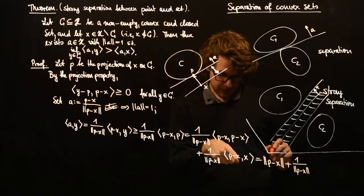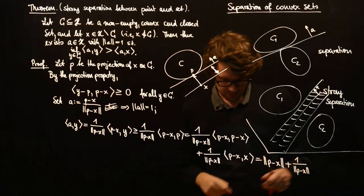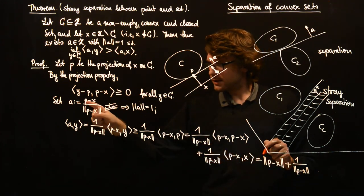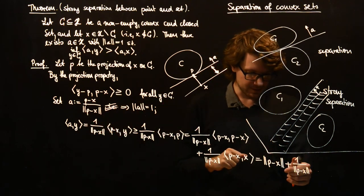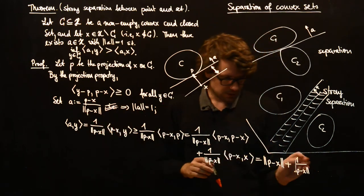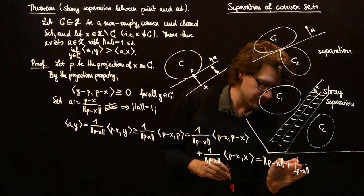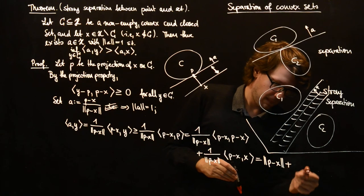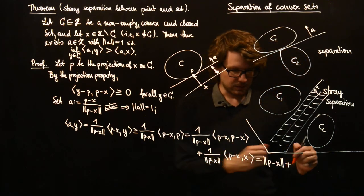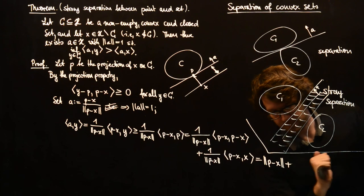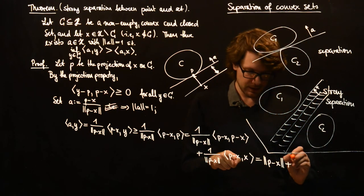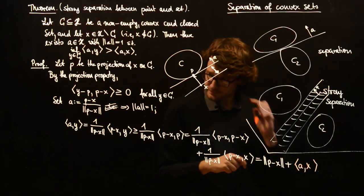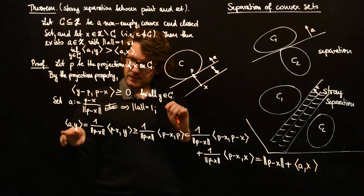And here we have, P minus X is equal to A times norm of P minus X. This is actually what we want here. So this is inner product of A with X. And we see we have this thing here.